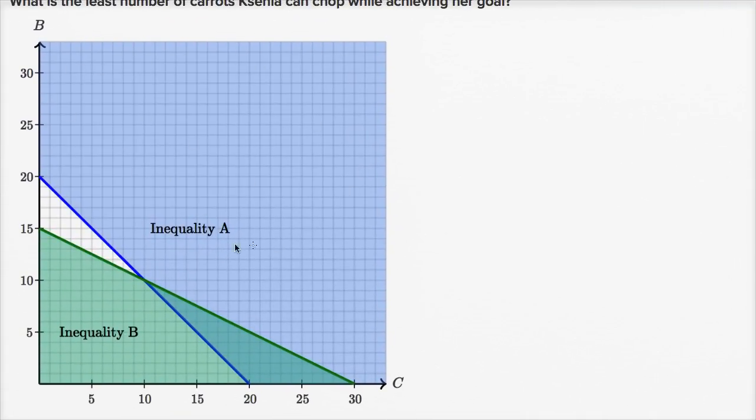So all of this blue shaded area, and even the line is a solid line, so it includes points on the line. These are all of the scenarios where she's chopping at least 20 vegetables, all this blue area, including the blue line.